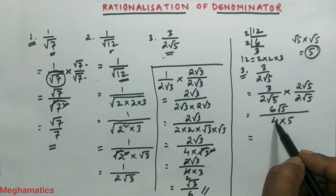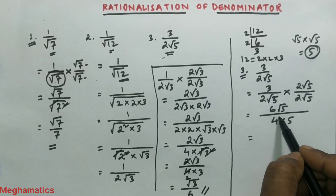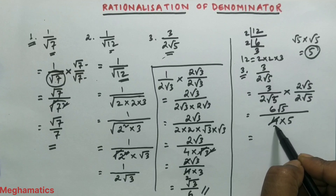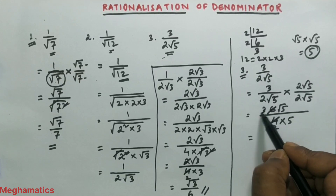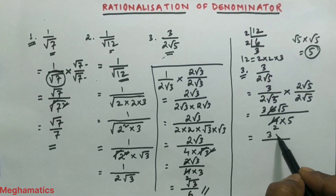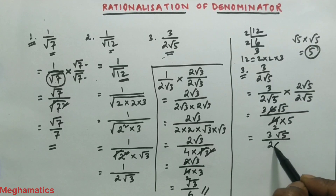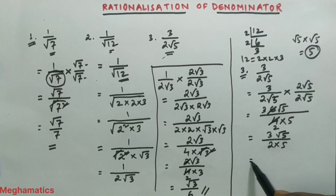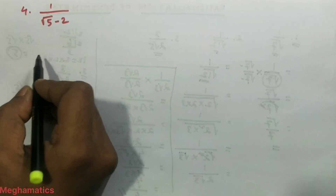In the denominator, 2 into 2 is 4, and root over 5 into root over 5 is 5, giving 4 into 5. Since 4 and 6 are both divisible by 2, we divide: 6 divided by 2 is 3 and 4 divided by 2 is 2. So the numerator becomes 3 root over 5 and the denominator becomes 2 into 5, which is 10. The answer is 3 root over 5 by 10.